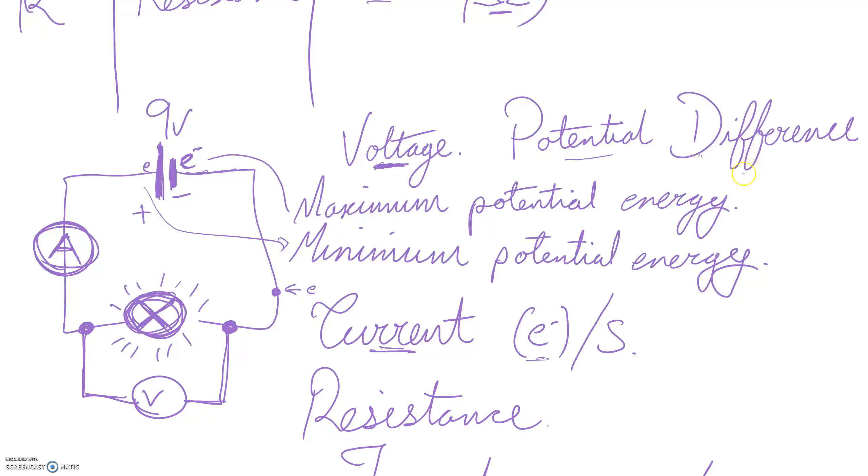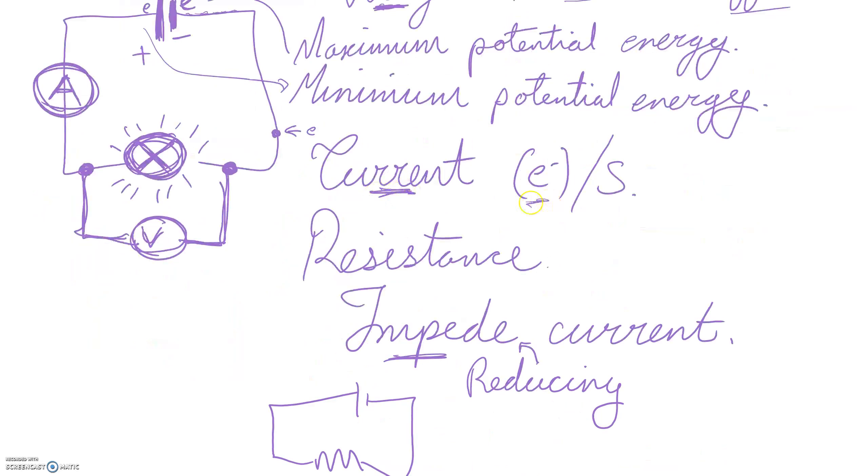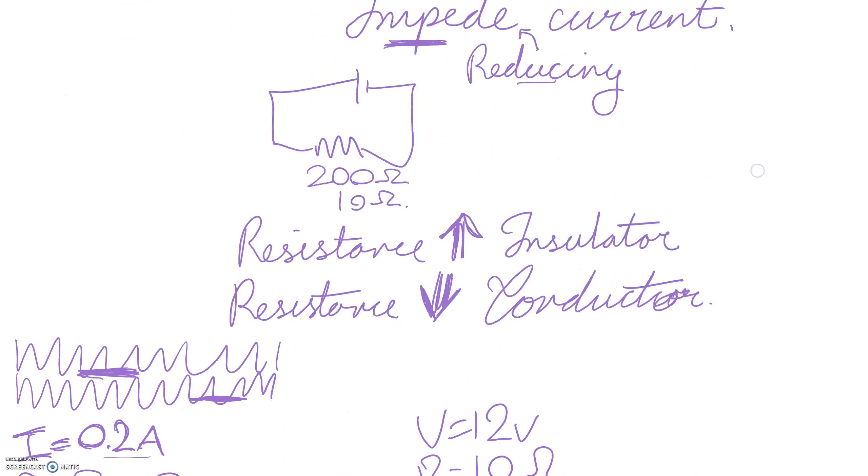Voltage is the potential difference. It's the difference in energy between two points. That's why we put our voltmeter around what we're measuring. Current is how many electrons go past in a second. We put it inside the circuit. Resistance isn't about slowing electrons down. It's about reducing the amount that go past impeding the flow of current. Something that's got a very good resistance is an insulator. Something that's got a very low resistance is a conductor.